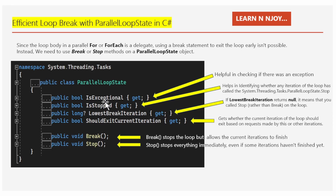IsExceptional is a property that helps us identify if there was an exception during execution. IsStopped indicates if any iteration called a stop method. LowestBreakIteration — if it returns null, it means that you called stop rather than break on the loop. ShouldExitCurrentIteration talks about whether the current iteration of the loop should exit based on requests made by this or other iterations. If it is true, it means the current iteration should exit; otherwise it returns false.